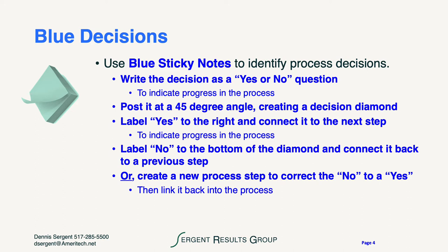Blue decisions are an opportunity to take the same sticky note and identify a decision by turning the sticky note on its side at a 45-degree angle or thereabouts. This creates a decision in the flow. Labeling the yes to the right connects it to the next step and indicates progress or flow in the process. Where we label no to that yes-or-no question is where we connect it back to a previous step, or sometimes we create a new process step that comes before the next step of progress in the process.